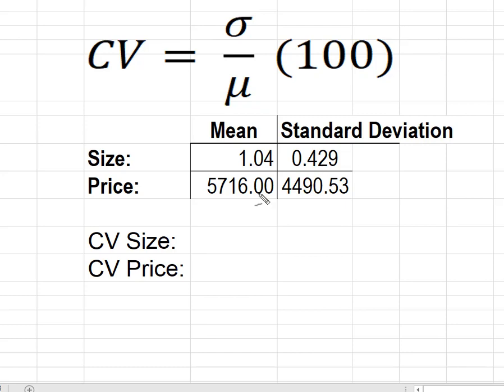I'm going to start with size, and I know that for size the standard deviation is 0.429. I'm going to take that and divide it by the mean, 1.04, and that's going to give me 0.413.